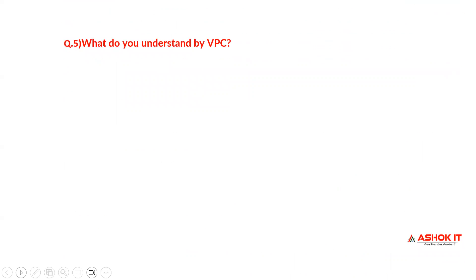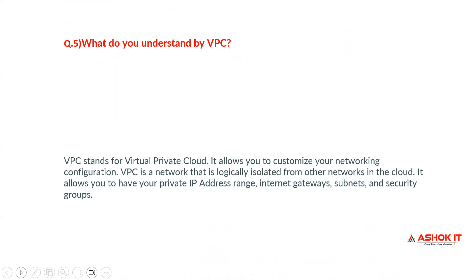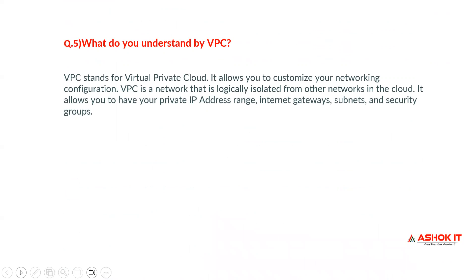What do you understand by VPC? VPC stands for Virtual Private Cloud. It allows you to customize your networking configuration. VPC is a network that is logically isolated from other networks in the cloud. It also allows you to have your own private IP address, internet gateways, subnets, and security groups.